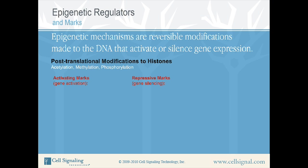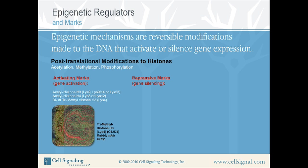Activating marks create a more open conformation to the chromatin and allow transcriptional activation to occur by providing transcription factors access to the DNA. Examples of activating marks include acetyl-histone H3 lysine 9, lysine 9 and 14, or lysine 23; acetyl-histone H4 lysine 8 or lysine 12; and di- or trimethyl-histone H3 lysine 4.